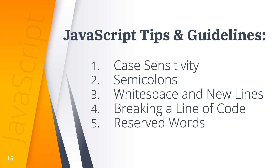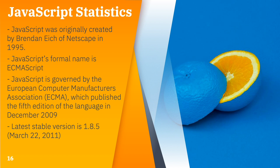JavaScript is a registered trademark of Oracle Corporation. JavaScript was originally created by Brendan Eich of Netscape in 1995. JavaScript's formal name is ECMAScript, which is governed by the European Computer Manufacturers Association, or ECMA. ECMA published the fifth edition of the language in December 2009. The latest stable version is 1.8.5, as of March 22, 2011.